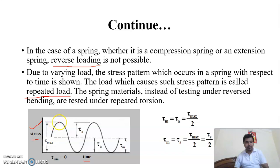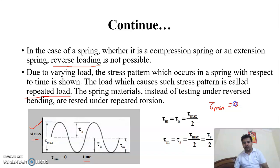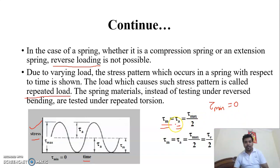If stress is negative, that means if it is compressive, it will be compressive and its minimum value is 0. In repeated loading, tau maximum varies and tau minimum is 0. Stress amplitude equals (tau max minus tau min) divided by 2, and mean stress equals (tau max plus tau min) divided by 2. When tau minimum equals 0 in repeated loading, both stress amplitude and mean stress equal tau maximum divided by 2.